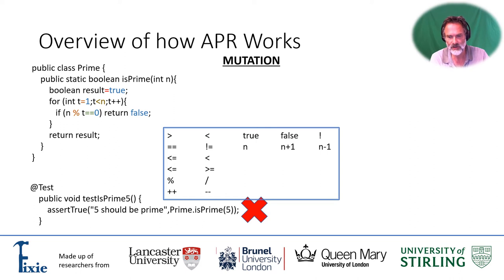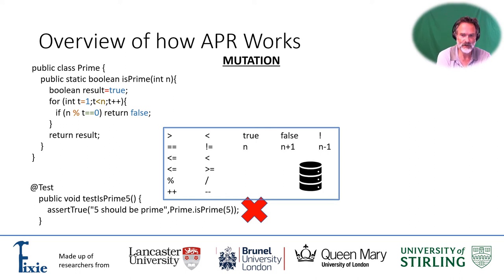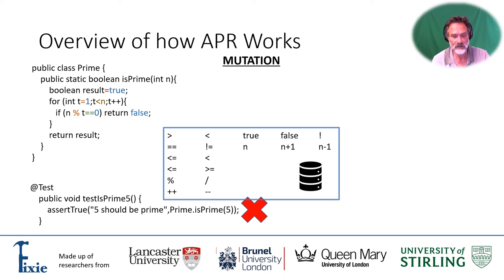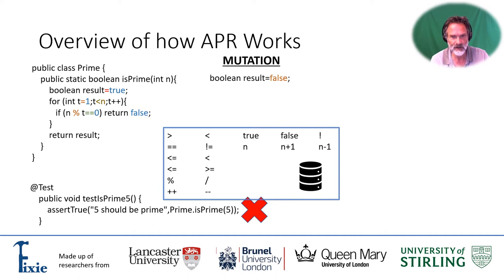And we learn those substitutions — those mutations — from git repositories, where we look at the changes that have occurred when people have fixed bugs. So we go, okay, let's start applying those.